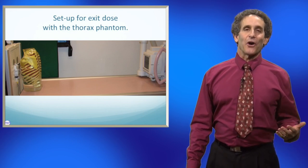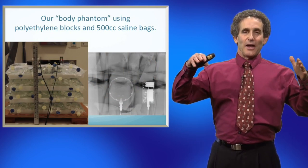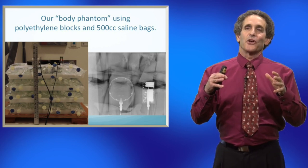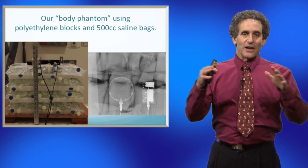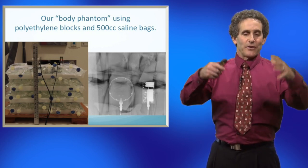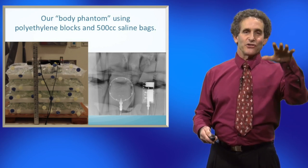So we made one of our own up, and what we ended up using was those blocks of polyethylene that we have, and then just a bunch of bags of saline water. So they were 500 cc saline bags, just taped together as tight as possible, and everyone was the same. So we made four of them, and then we just put the ion chamber on top.